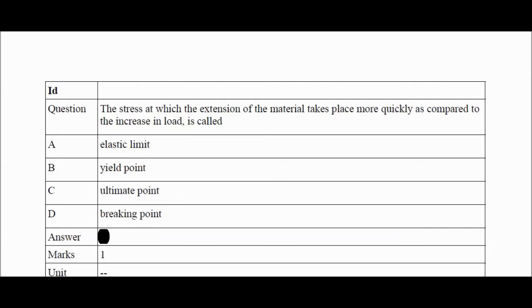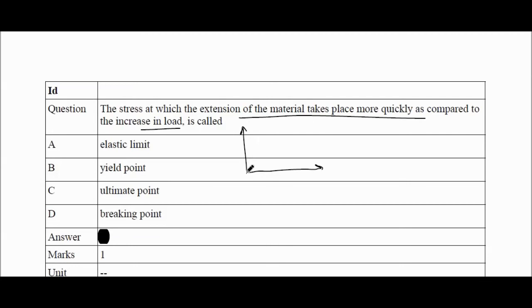The stress at which extension of the material takes place more quickly compared to the increase in load — extension (delta L) is increasing rapidly while load increases slowly or stays more or less constant. This corresponds to the yield point, which we have discussed before. The correct answer is C — yield point.